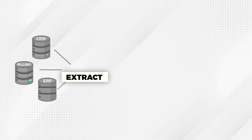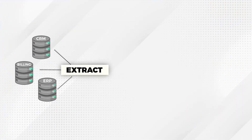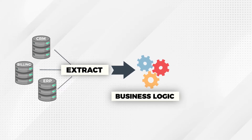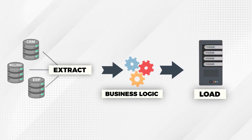First, we'll start with ETL, which stands for Extract Transform Load. As the acronym implies, in this scenario we first extract the data from a source system, and then this is followed immediately by applying transformations — aka business logic — to that extracted data. We then finally load that transformed data into some final tables where it can be consumed by end users and reporting tools like Power BI or Tableau.